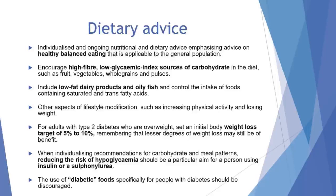For adults with type 2 diabetes who are overweight, we should set an initial weight loss target of 5–10%, remembering that lesser degrees of weight loss may still be of benefit. When individualizing recommendations for carbohydrate and meal patterns, reducing the risk of hypoglycemia should be a particular aim for a person using insulin and sulfonylurea. The use of foods marketed specifically for people with diabetes should be discouraged.